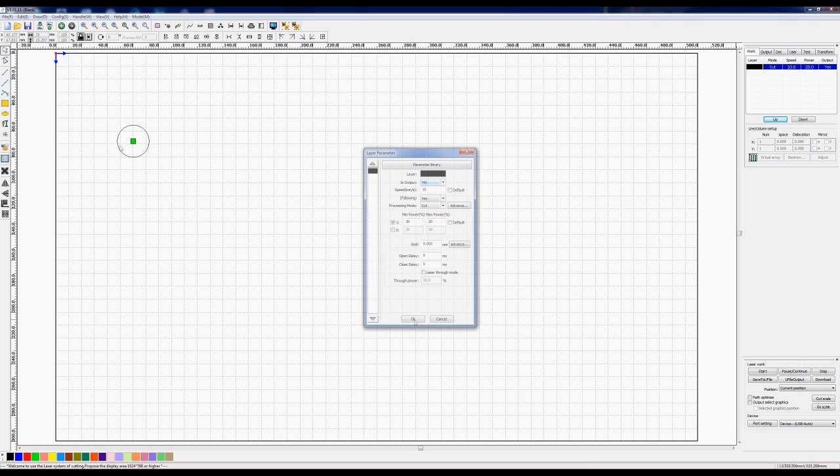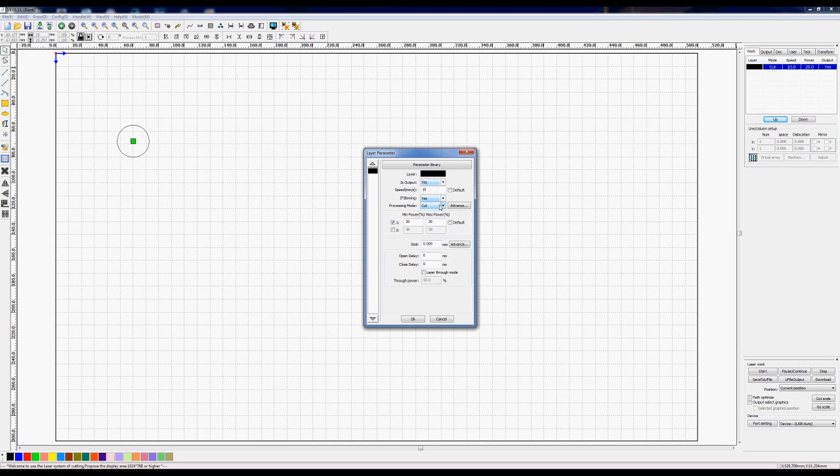We now save that to a file. We'll come back in and reassign this—instead of cut, we will change this to dot. Now take a look at the parameters and see how they change.